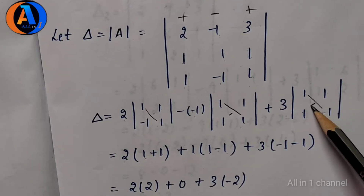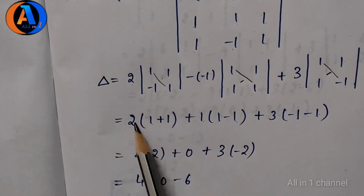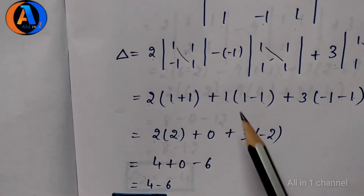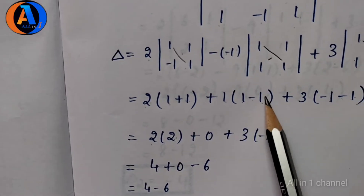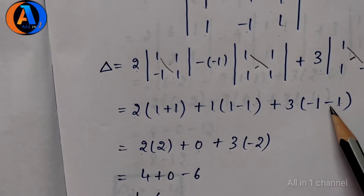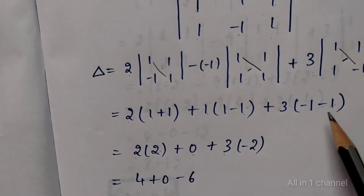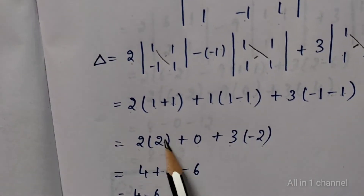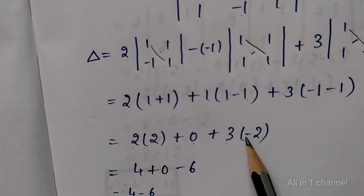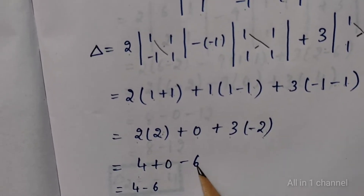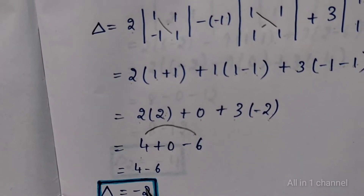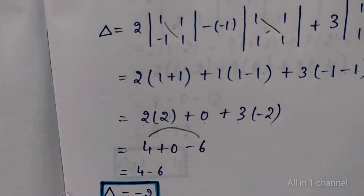Cross multiply: 1 into minus 1 equals minus 1; 1 into 1 equals 1. Here also minus, so minus 1. 1 into 2 equals 2. 2 into 2 equals 4. Plus 1 minus 1 equals 0. So 0. Plus 3. Minus 1 minus 1, so minus 2. 2 into 2 equals 4. Plus 0. 3 into 2 equals 6, but here we have minus, so minus 6. 4 minus 6 equals minus 2. So delta equal to minus 2.